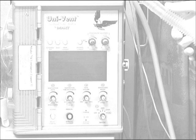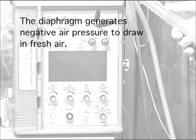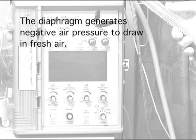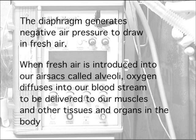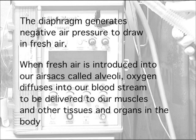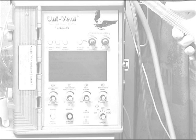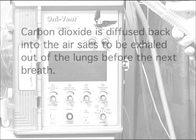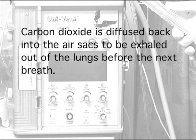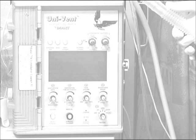Under normal conditions, we use a large muscle in the torso called the diaphragm to generate negative pressure within the chest and lungs to draw fresh air into our body. When fresh air is introduced into our air sacs called alveoli, oxygen diffuses into our bloodstream to be delivered to our muscles and other tissues and organs. At the same time, a byproduct of metabolism called carbon dioxide is diffused back into the air sacs to be exhaled out of the lungs before the next breath. This cyclical motion and exchange of gas is the normal process we associate with spontaneous breathing.